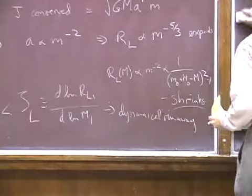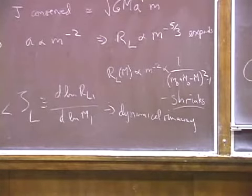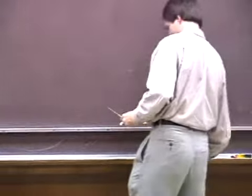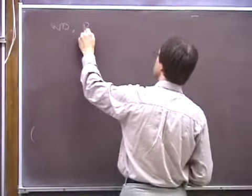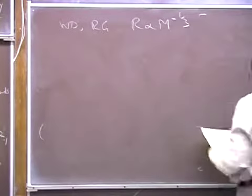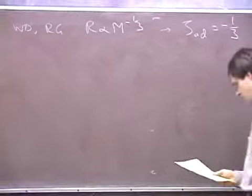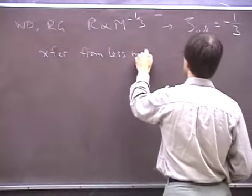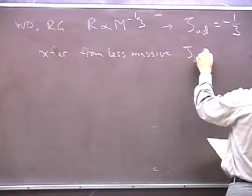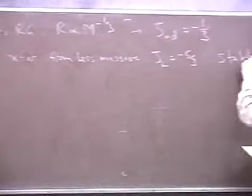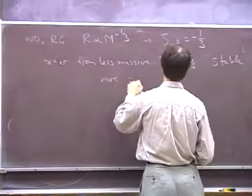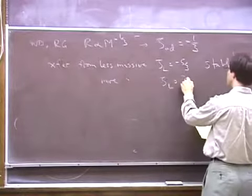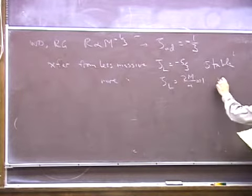For white dwarfs and fully convective red giants, the radius goes as mass^{-1/3}, so ζ_adiabatic = -1/3. Transfer from the less-massive component gives ζ_L = -5/3, which is stable on a dynamical timescale. Transfer from the more-massive component gives ζ_L = 2M/m >> 1, which is unstable.